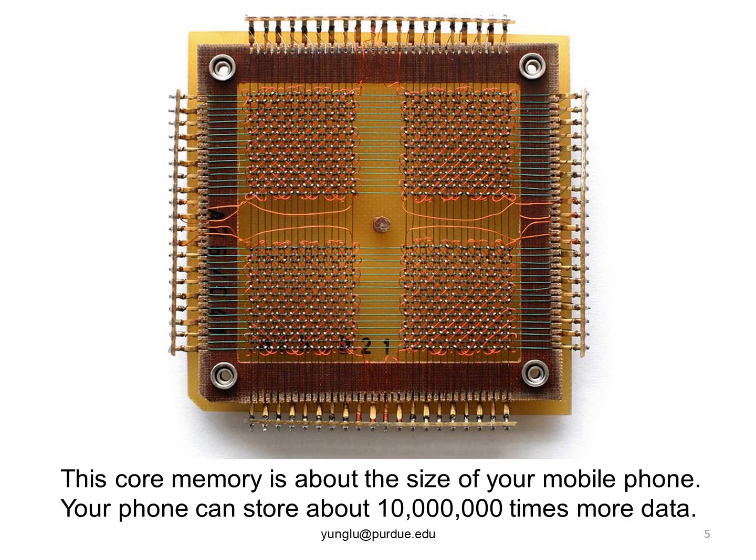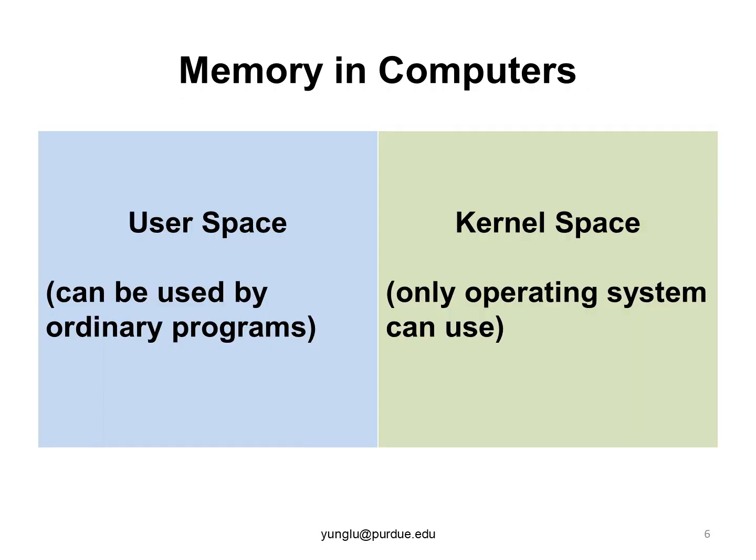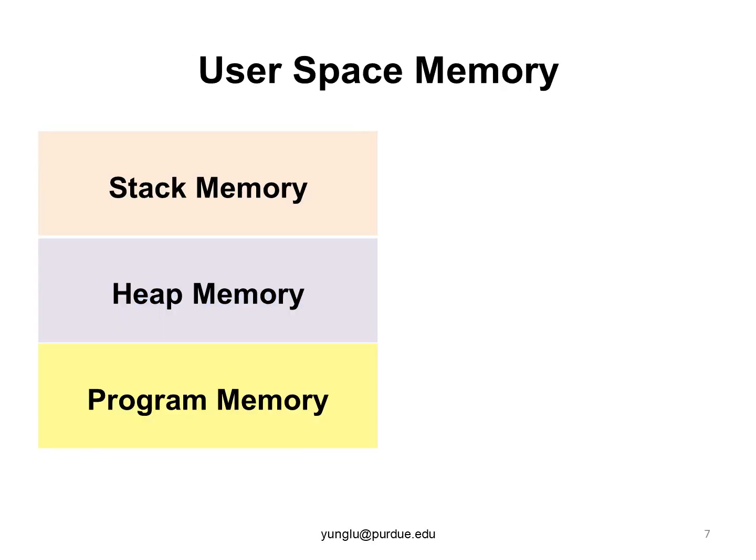Inside a computer, memory is divided into two parts. The first is called user space, used by ordinary programs. The other part is called kernel space, and only the operating system can use it. I will not talk about the kernel space any further in this series of lectures. The memory in the user space is further divided into three parts: stack memory, heap memory, and program memory.